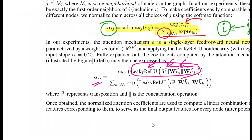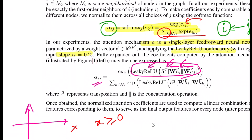For Leaky ReLU, they use a slope of 0.2. Leaky ReLU is a non-linearity where for x greater than or equal to zero you get y = x, and for x less than zero you get y = alpha * x, where alpha is the slope parameter — chosen here as 0.2.